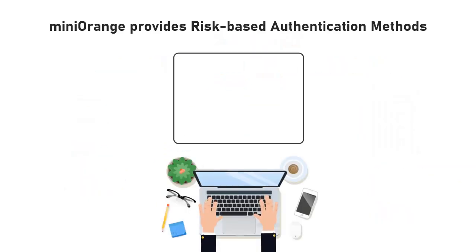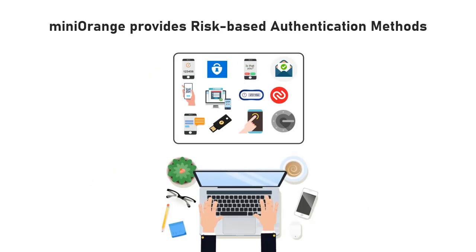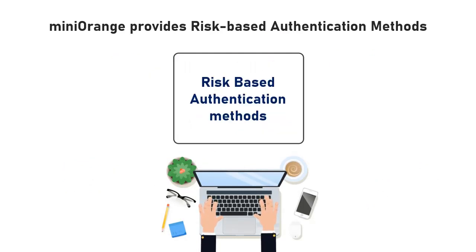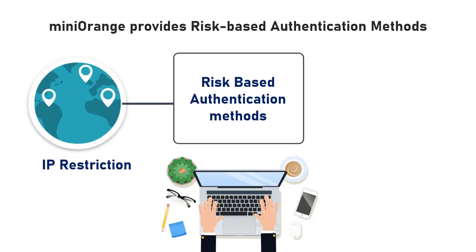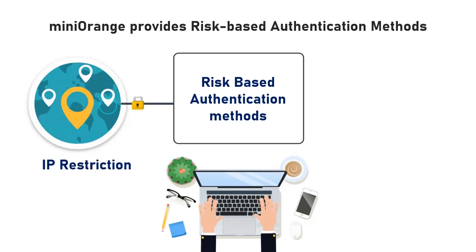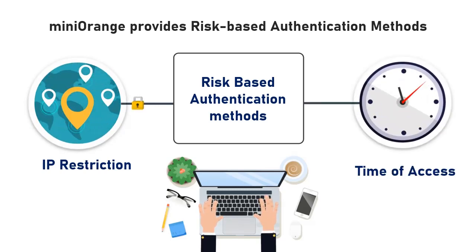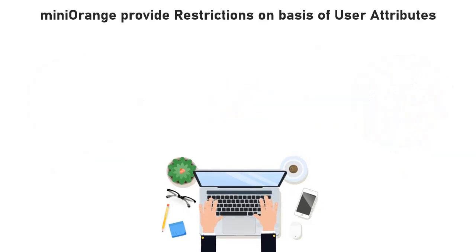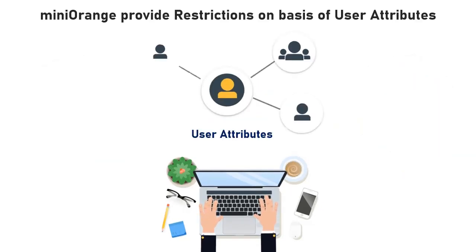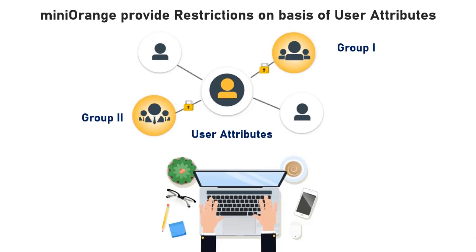In addition to the 15 plus MFA methods, Mini Orange also provides risk-based authentication methods, which are authentication based on IP restriction and authentication based on time of access. Mini Orange can provide restrictions on the basis of user attributes also, like groups and many more.